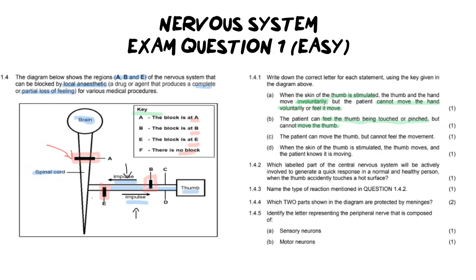The one going out is the sensory. So if we were to cut this in a location in order for us to be able to feel the thumb being touched, and we can't move the thumb, we would say that the particular block is at E.